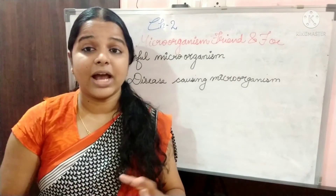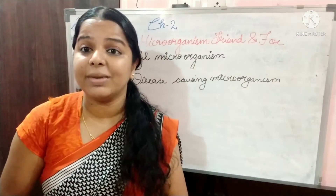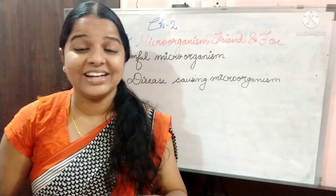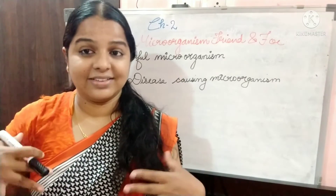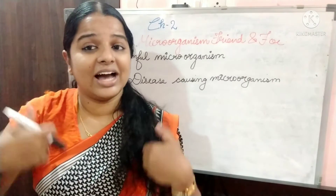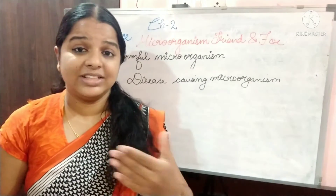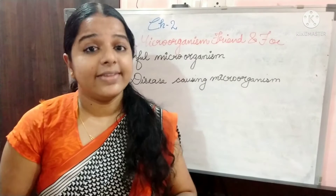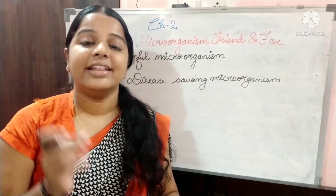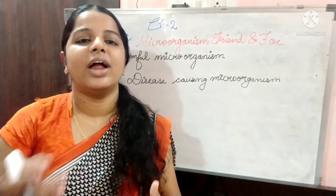Malaria is spread by the female Anopheles mosquito. They carry the protozoa present in the body, and when they bite humans, that protozoa is injected into our body, causing malaria. Similarly, dengue is caused by the Aedes mosquito — the dengue-causing organism is present in that mosquito, and while biting it spreads into our body.